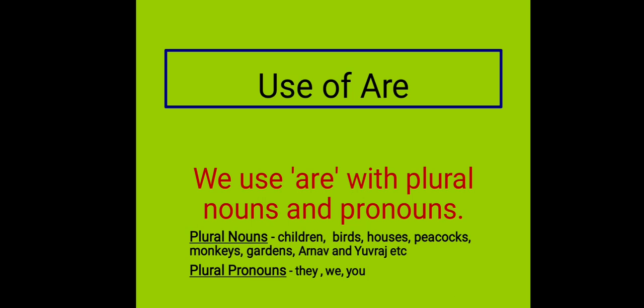So, plural nouns: children, birds, houses, peacocks, monkeys, gardens, Arnav and Yuvraj. Plural nouns ka matlab hota hai bahut sara naam wale shabd. Yaani bahut sara naam wale — like, child hoga ek vachan, yaani singular, and children is plural. Child ek bachay ke liye use kia jata hai, aur children bahut saray bachay ke liye.